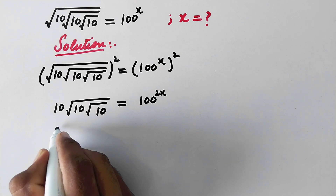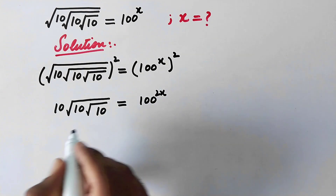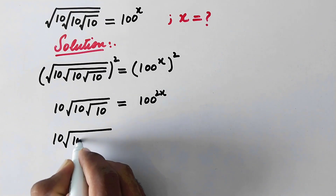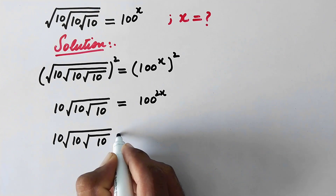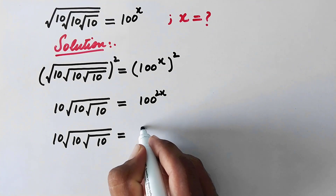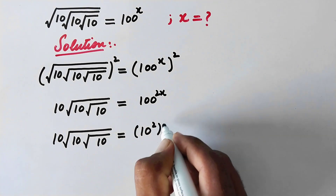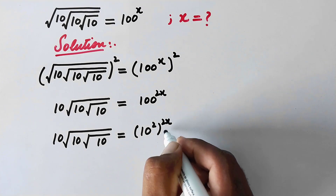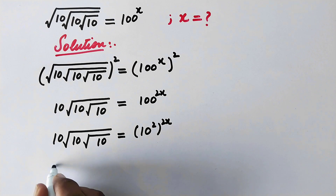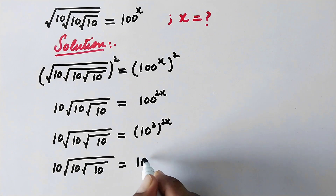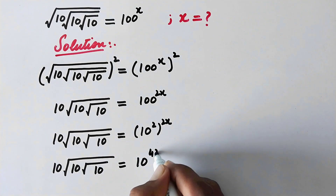Now here again we will take square. But first we will write: 10 times square root 10 times square root 10 is equal to this 100, which is the same as 10 squared, raised to power 2x. So it will be 10 times square root 10 times square root 10 is equal to 10 raised to power 4x.